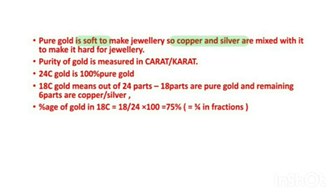The purity of gold is measured in carats — you may have heard this from your parents. 24 carat gold is considered to be 100% pure gold. To check the purity, we divide the gold into 24 parts. For example, 18 carat gold contains 18 parts of pure gold out of 24 total parts, and the remaining 6 parts are impurities in the form of copper and silver added to make it harder.